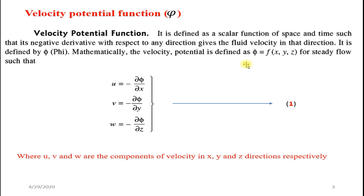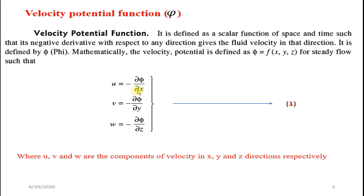Mathematically, velocity potential function phi is a function of x, y, and z for steady flow. By definition, the negative derivative of phi with respect to x gives the velocity in that direction. The x-direction velocity is u, y-direction velocity is v, and z-direction velocity is w. Differentiating phi with respect to any coordinate gives the negative of velocity in that direction.